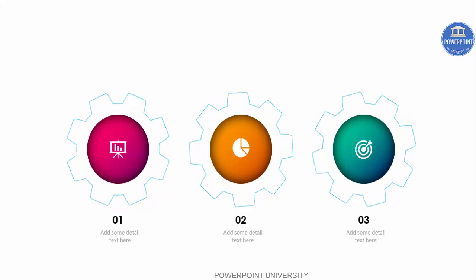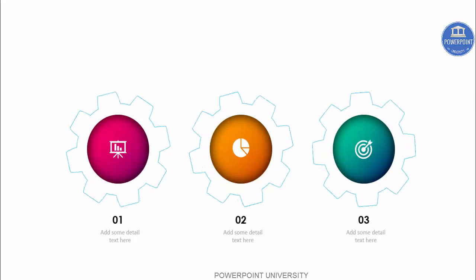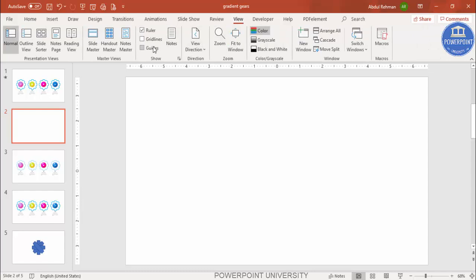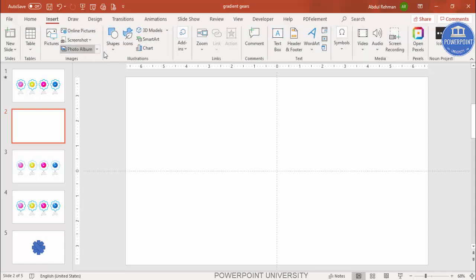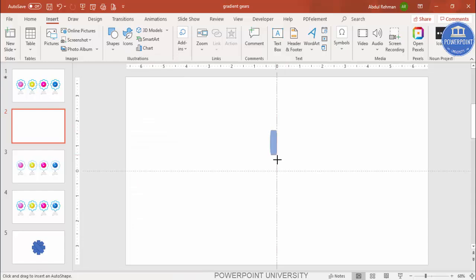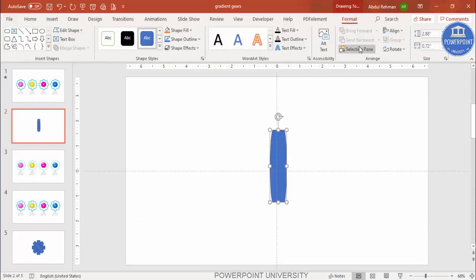Add a new slide, go to View and enable the guides. Then go to Insert Shapes and under the Flow Chart category, select the flowchart terminator shape. Draw it exactly in the center at the size you need. Make sure to align center and align middle, and set the shape outline to no outline. You can increase or decrease the size as needed.